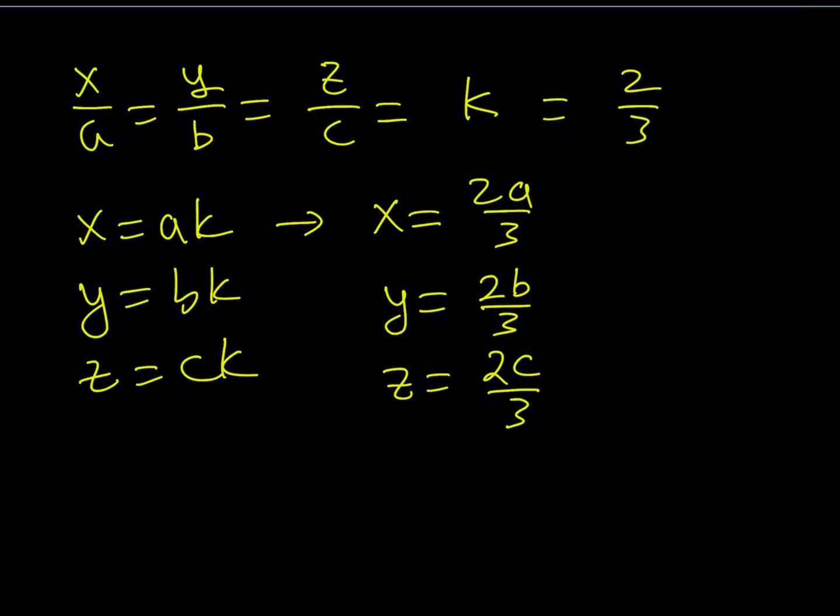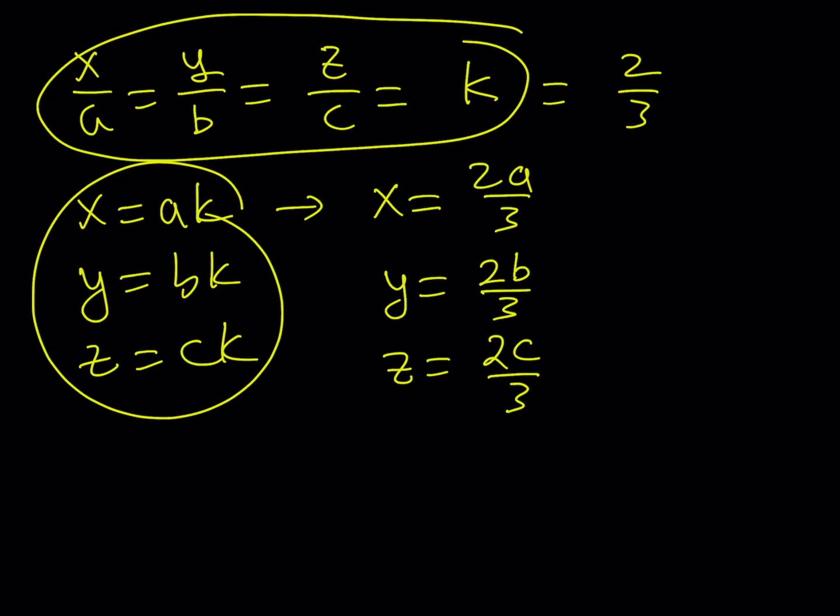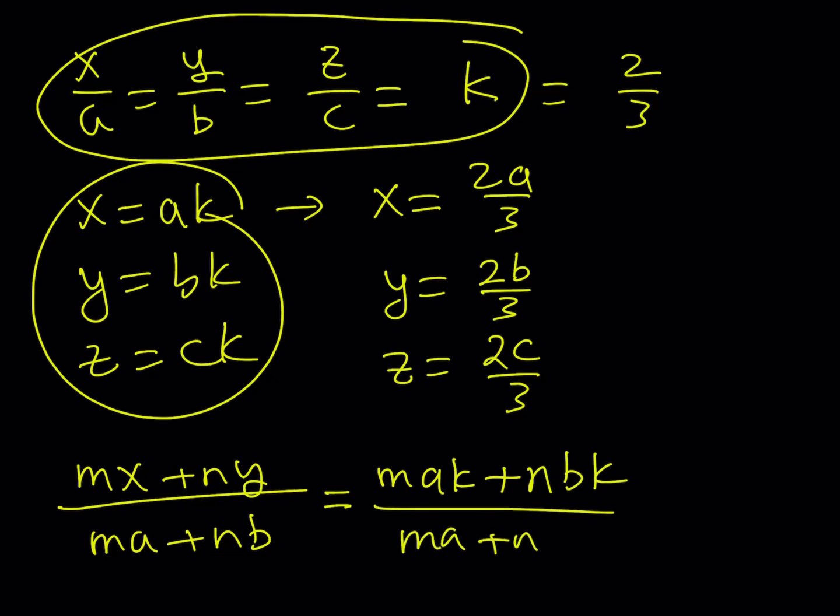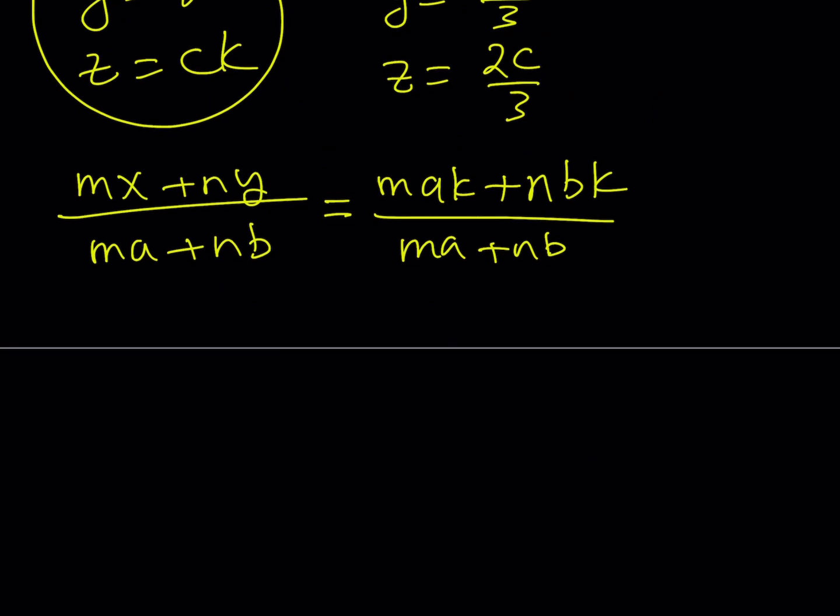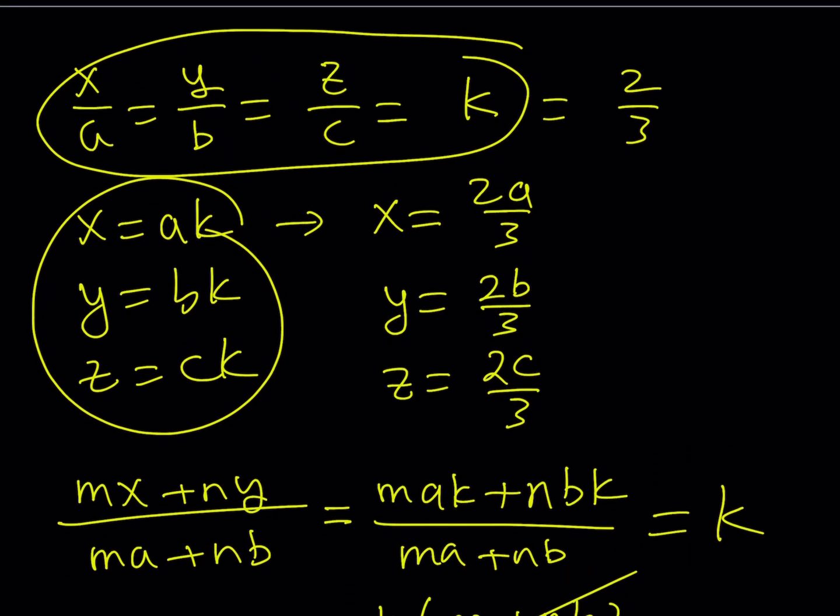But where does this property come from? Maybe we can briefly talk about it. If you replace x with ak and y with bk in mx plus ny over ma plus nb, you get mak plus nbk divided by ma plus nb. From here, you can factor out a k. This proves that our expression actually equals k as well. This is a really nice property of proportions that can be used in many different situations.